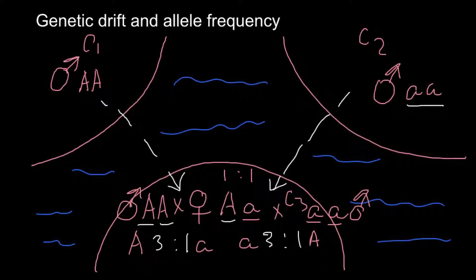In one scenario the dominant allele is represented by 75%, and in the other scenario the recessive allele is represented by 75% and the dominant allele by 25%. This is of course an oversimplified picture — a community can consist of thousands or hundreds of thousands of people. Any genetic drift between communities with different allele frequencies will influence the receiving community, and the smaller the community, the greater the influence.